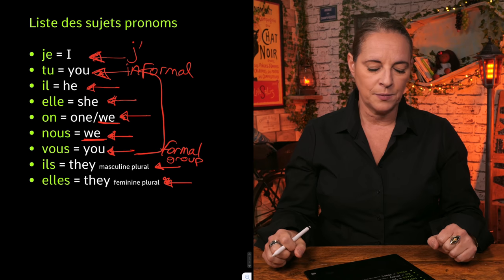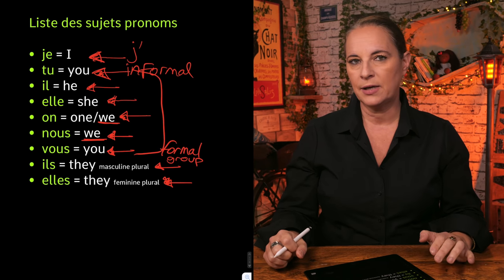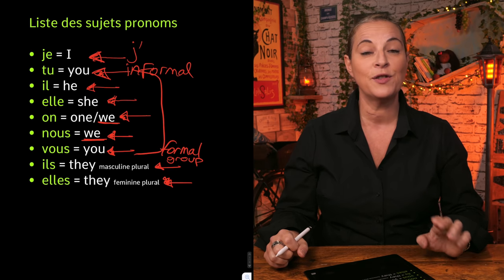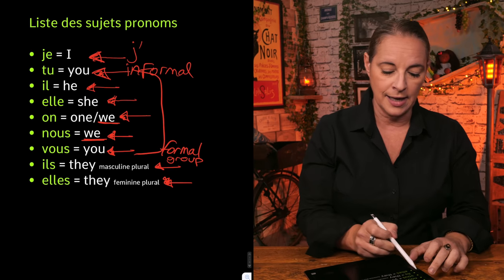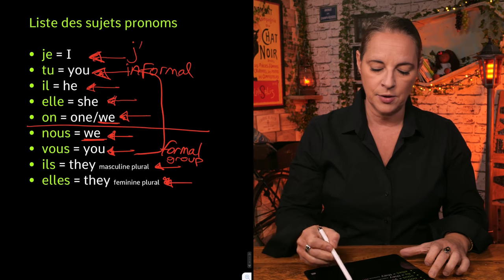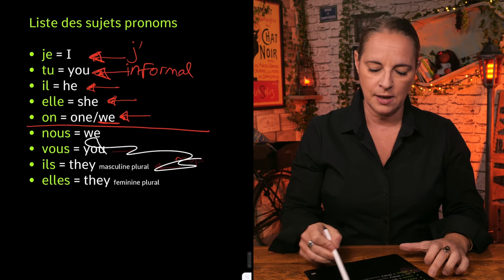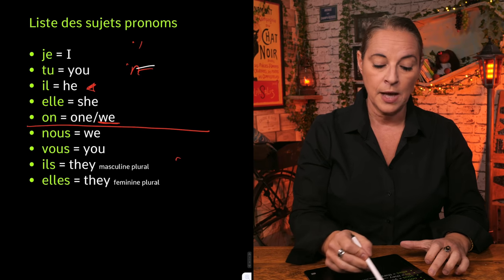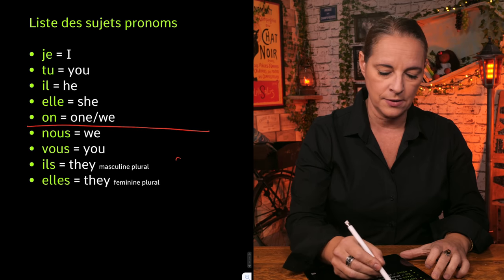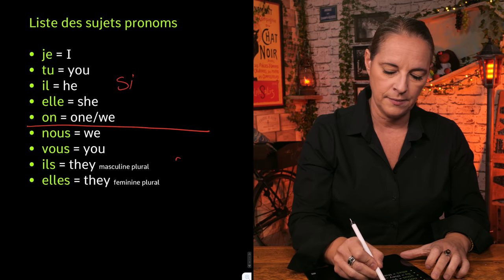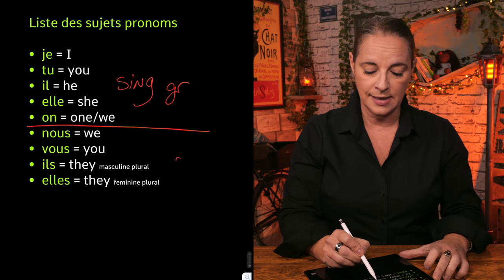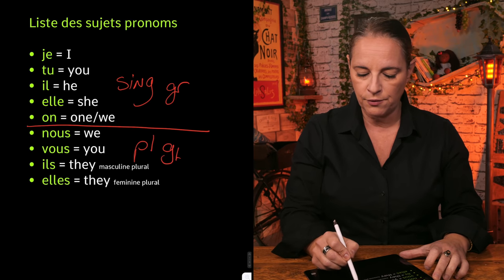What's interesting between on and nous is that when it comes to endings and conjugation, they are not conjugated with the same endings. On is seen as a singular group, and the other one — nous — is seen as the plural group.